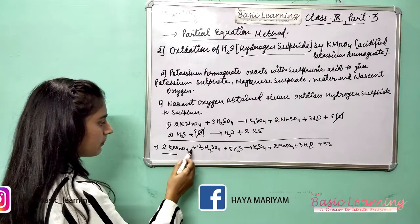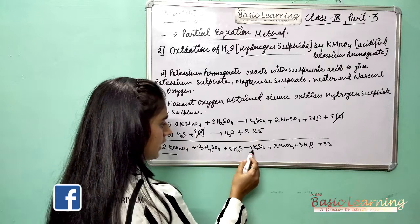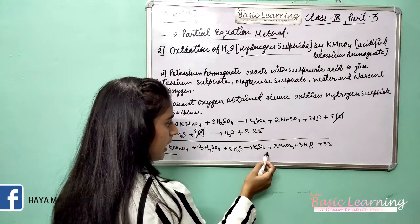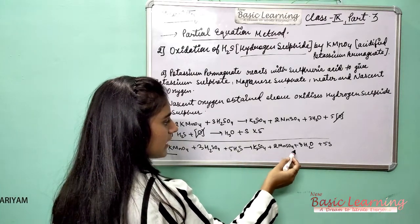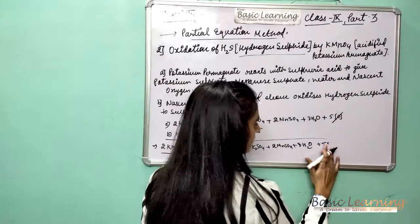So we are left with 2KMnO4 plus 3H2SO4 plus 5H2S gives K2SO4 plus 2MnSO4 plus 8H2O plus 5S. This is 5S.